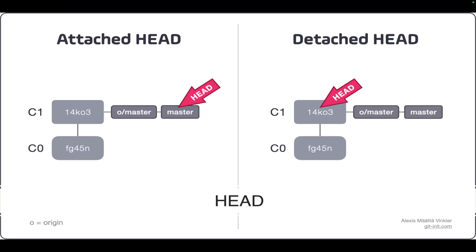The most recent commit on the currently checked-out branch is indicated by a special pointer called HEAD. When you are on a specific branch, HEAD points to the latest commit on that branch. Sometimes, instead of pointing to the tip of the branch, HEAD can be directly pointed to a specific commit — that is called a detached HEAD state. If you are pointing to a recent commit your HEAD is attached; if pointing to a different, older commit, that is the detached HEAD state.